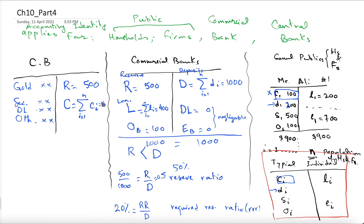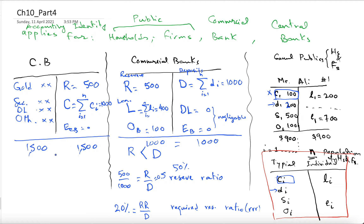In a central bank balance sheet example, both sides balance at 1,500. When something happens somewhere, it may affect only one person, or it may affect the person and the bank, or it may affect the individual's, commercial bank's, and central bank's balance sheet simultaneously.